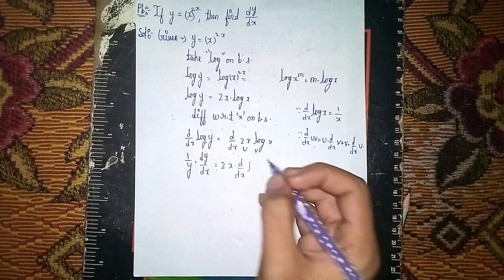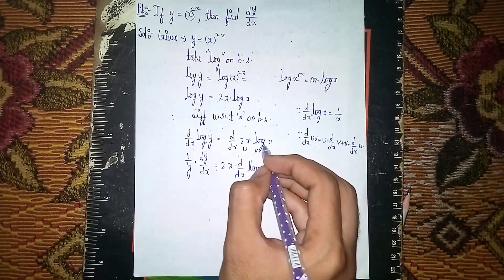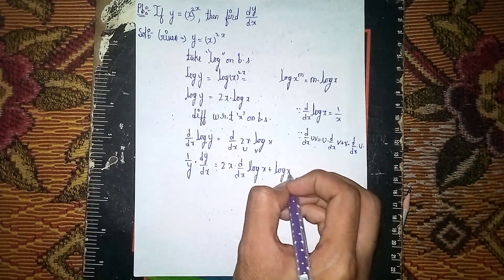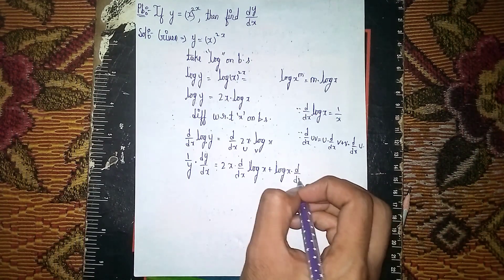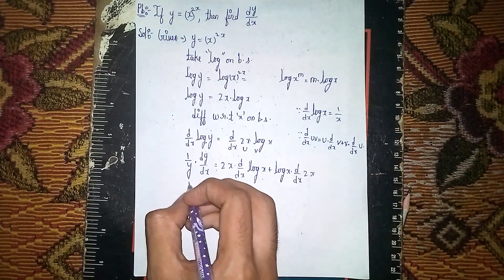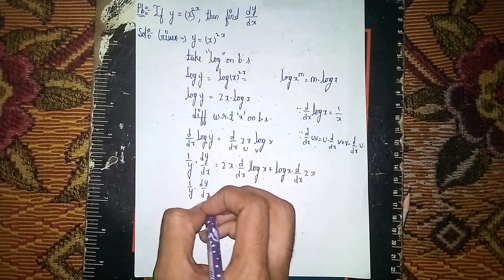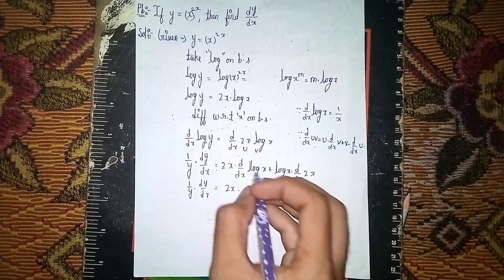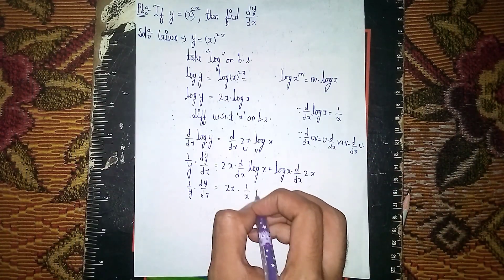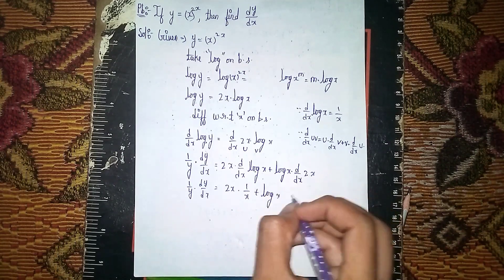Applying the product rule: 2x into d/dx of log x, plus log x into d/dx of 2x. Now d/dx of log x equals 1/x, and d/dx of 2x equals 2. So we get: 1/y into dy/dx equals 2x times 1/x plus log x times 2.